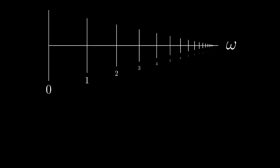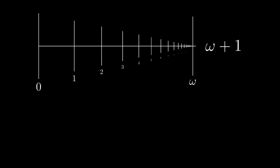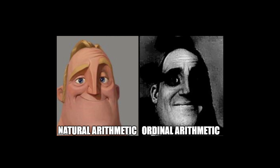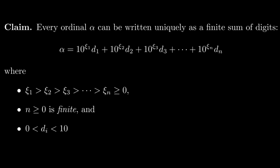Ordinal numbers are what you get when you decide to count past infinity. For example, we have an ordinal omega, which is the first ordinal larger than all of the positive integers. Once you break past the finite barrier, there really is no stopping — you can count past omega and get to ordinals such as omega plus 1. While infinite ordinals are noticeably different from their finite counterparts, they share a surprising amount in common. For example, we can add, multiply, and even exponentiate with infinite ordinals. Perhaps most remarkably, we can expand an ordinal in any base, even an infinite one.